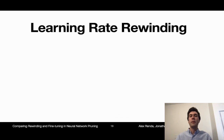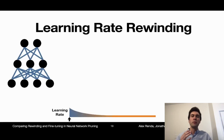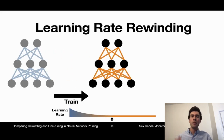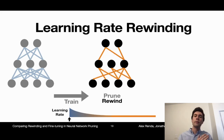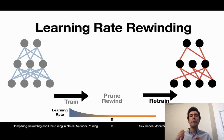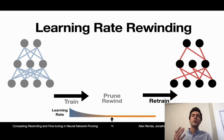A natural ablation of the weight rewinding algorithm is learning rate rewinding, which rewinds just the learning rate but not the weights. Learning rate rewinding proceeds as follows: first you train the network, then you prune the network, but this time you rewind the learning rate schedule to where it was earlier in training, and then continue to train the pruned network from the end of training using the learning rate schedule from earlier in training. One way to view learning rate rewinding is as an automated way of setting hyperparameters for fine-tuning, given a point in training to rewind to.